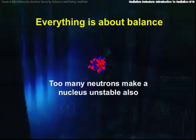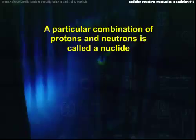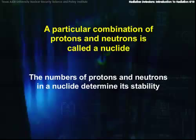Of all the combinations of protons and neutrons, there are only a couple hundred that are stable. A particular combination of protons and neutrons is called a nuclide. Let's look at the stable nuclides and some of the unstable ones also.